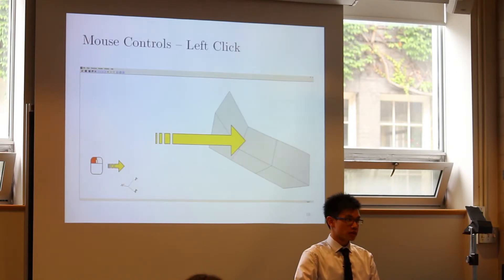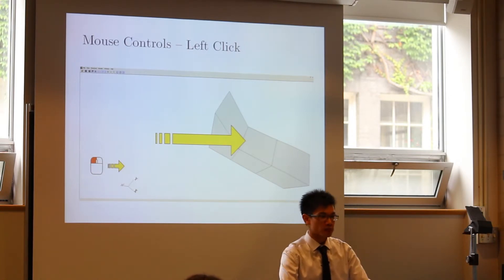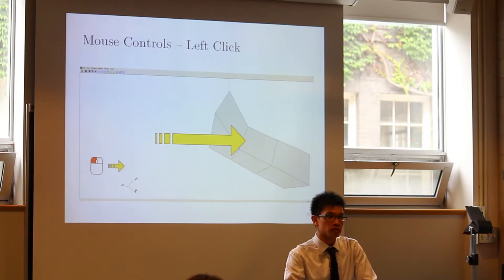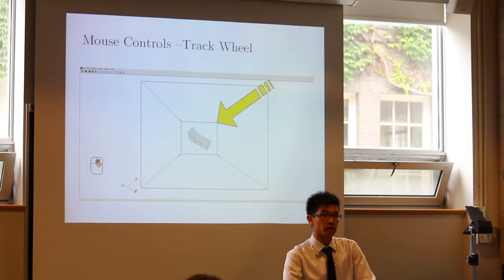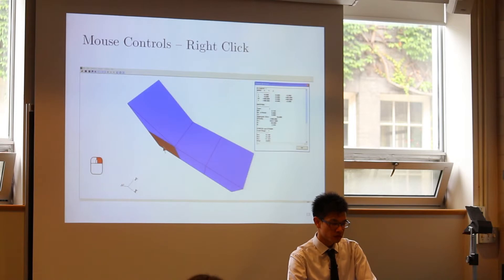In terms of user interface, Janus operations are primarily conducted using a standard three-button mouse with a track wheel. As shown here, the left mouse button is used to translate the model laterally as well as vertically about the screen. The middle mouse button is used for 3D models to rotate models about their axes. Scrolling the track wheel will zoom the model in and out. And lastly, the right mouse button is used to invoke the element attributes dialog, which I will discuss later.